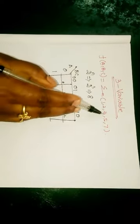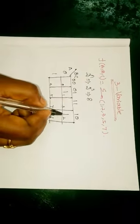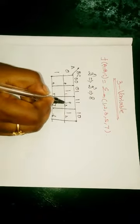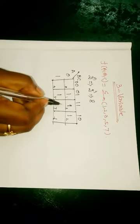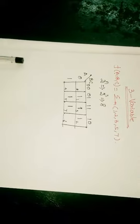We are going to make these cells as 1. Now, 1, 2, 3, 5 and 7. Now, we are going to make the grouping.